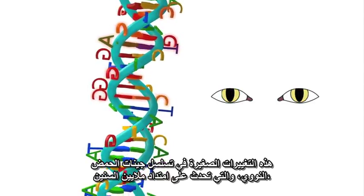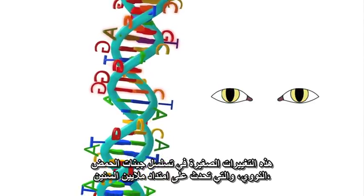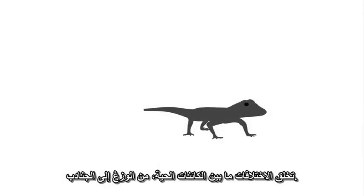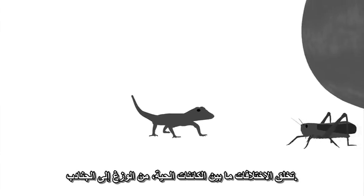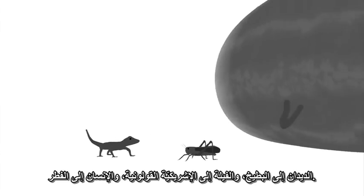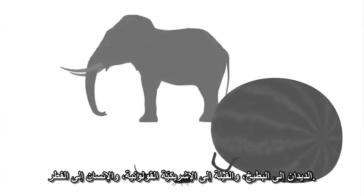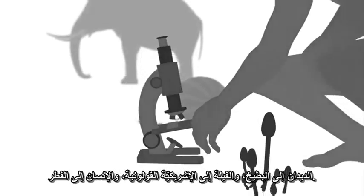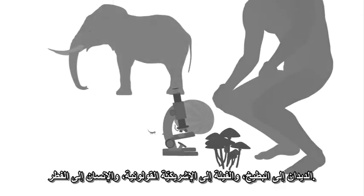It is these tiny changes in DNA gene sequences, happening over millions of years, that create the differences among living organisms — from geckos to grasshoppers, worms to watermelons, elephants to Escherichia coli, and man to mushroom.